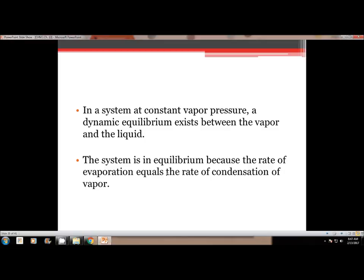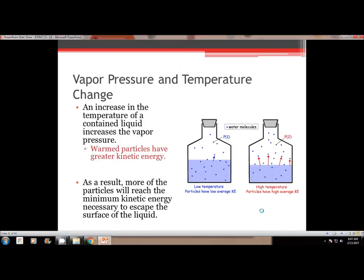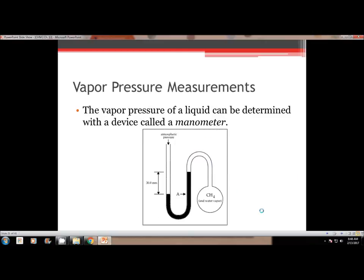So we talked about vapor pressure and how it works. Now let's compare it to the temperature changes. So an increase in temperature of a contained liquid will increase the vapor pressure because if you're increasing the temperature, it's moving more, so it can break the bonds more, and so it can move around faster than it did when it was in liquid form. So warm particles have greater kinetic energy. As a result, more of the particles will reach a minimum kinetic energy, and they'll escape the surface of liquid and become a gas instead. So this picture is just showing that the dots are just the particles escaping, and there's more particles escaping at a higher temperature than at a lower temperature.